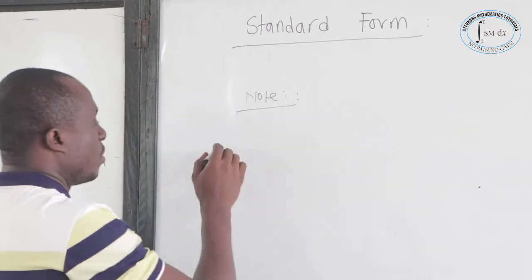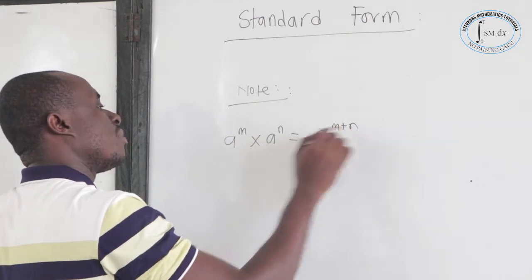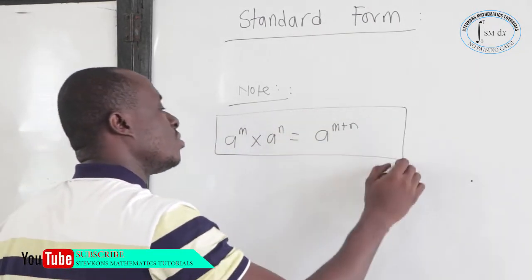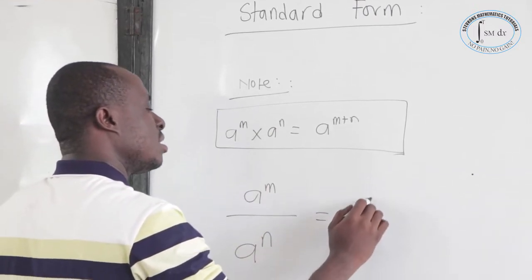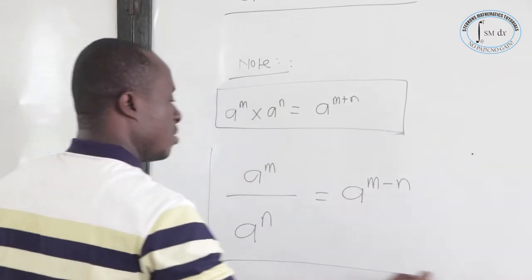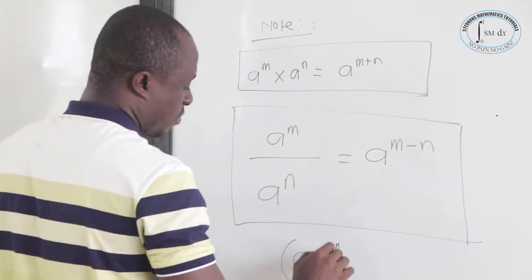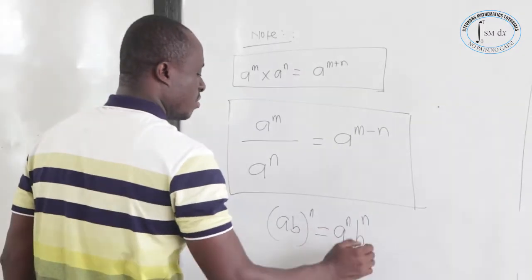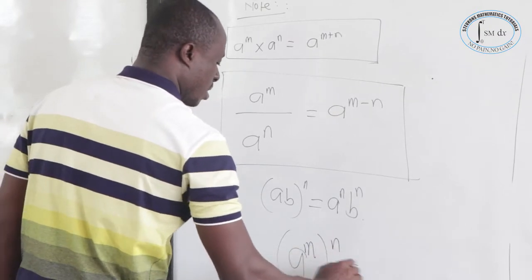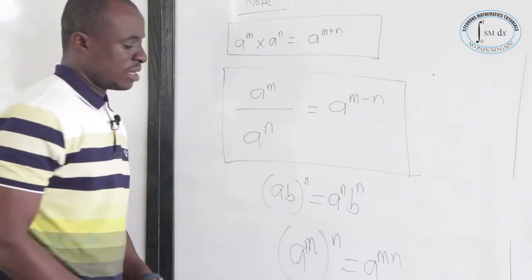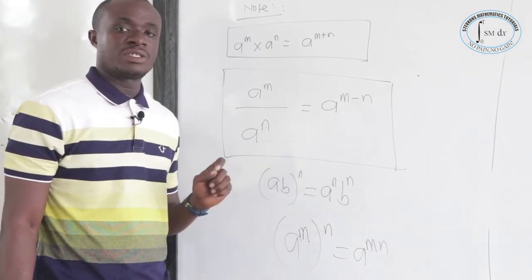Now let's note these index rules. If you have a to the power M times a to the power N, this equals a to the power M plus N. If you have a to the power M divided by a to the power N, this equals a to the power M minus N. Also, if you have AB all to the power N, this equals A to the N times B to the N. And if you have A to the power M, all to the power N, this equals A to the power MN. We will be using these rules a lot.